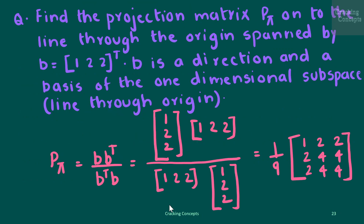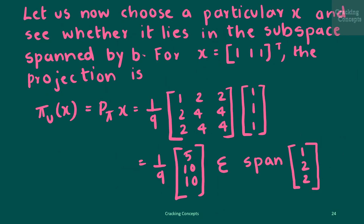We will see a problem where we are asked to find the projection matrix P_pi onto the line through the origin spanned by the basis b. The formula is P_pi equals b*b-transpose divided by b-transpose*b, and on substituting the values we get the result. Now we choose a particular value for x and see if it lies in the subspace spanned by b. Taking x as (1, 1, 1), we see that the projection pi_U(x) can be given by P_pi times x, and substituting the values confirms that the projection belongs to the span of the basis vector b.